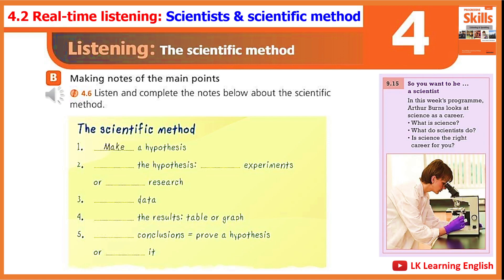Scientists can test a hypothesis in two main ways. They can do an experiment, which means a test in a laboratory. Scientists study what happens during the experiment. Or, they can do research, which means looking up information. They usually do research in a library, or nowadays, on the internet. With research, scientists look at what happened in the past. In both cases, experiments and research, they collect data. Data is information before it is organised.